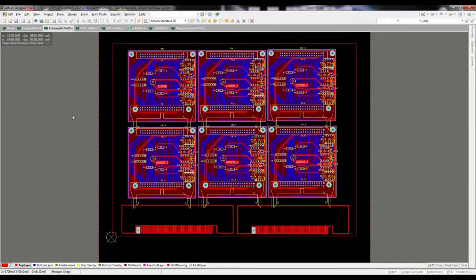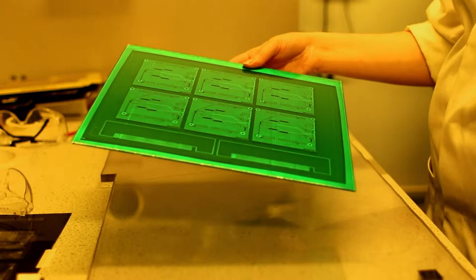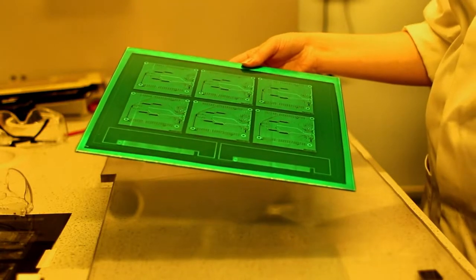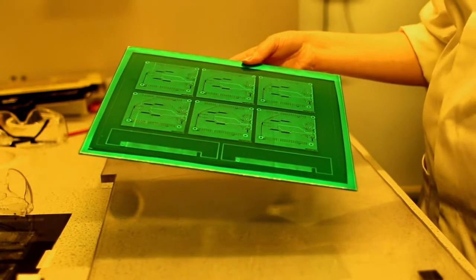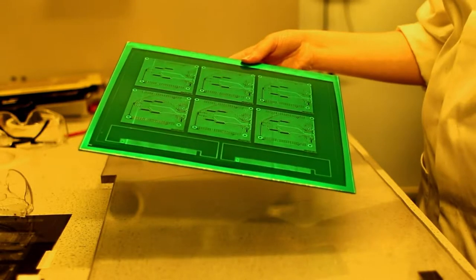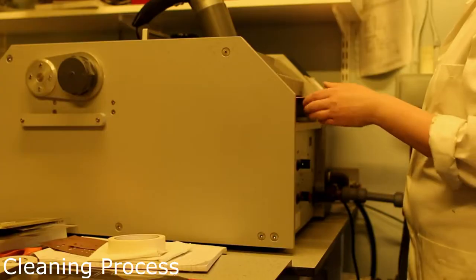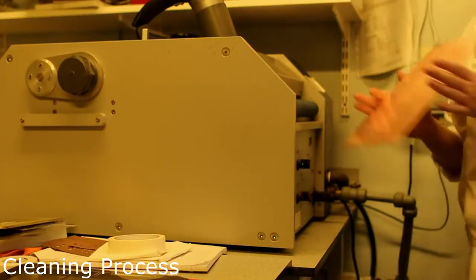For efficiency, multiple designs are combined onto a single production panel which when completed is split into individual boards. It's more cost effective to process boards in this way but it might mean you have to wait for the panel to fill up before the process is started to polish the surface of the copper making sure it's clean.